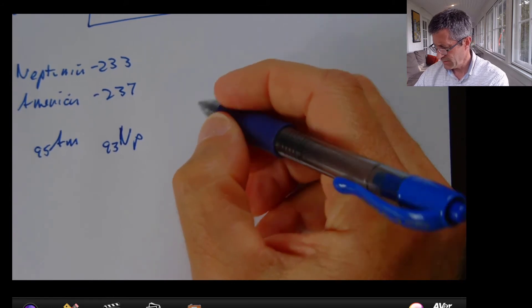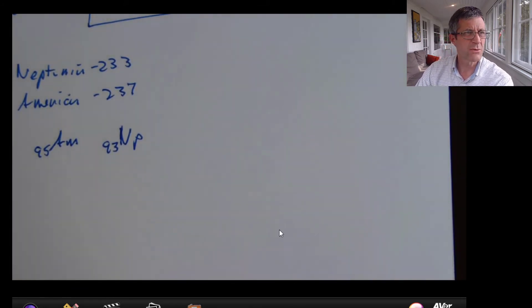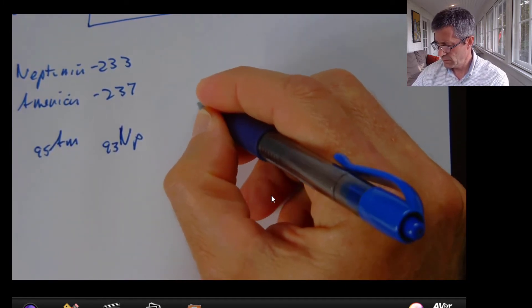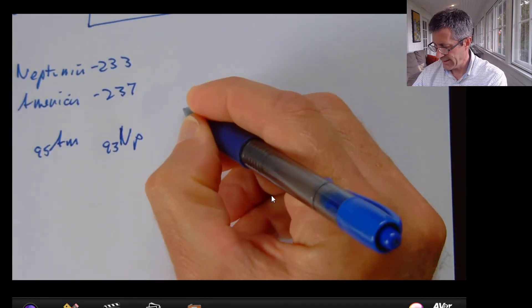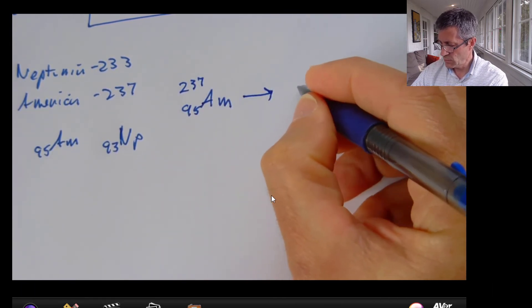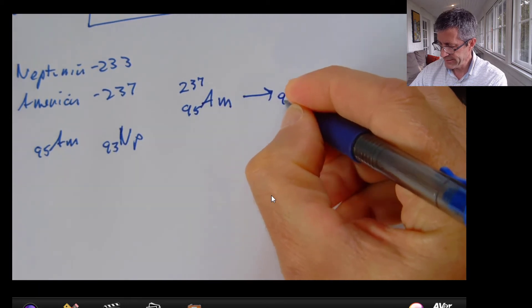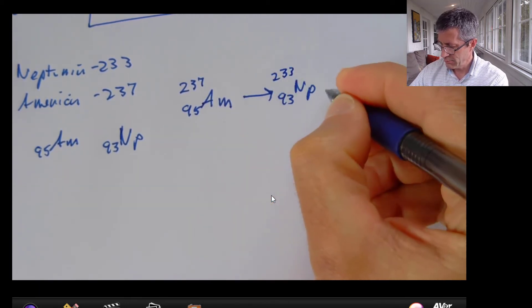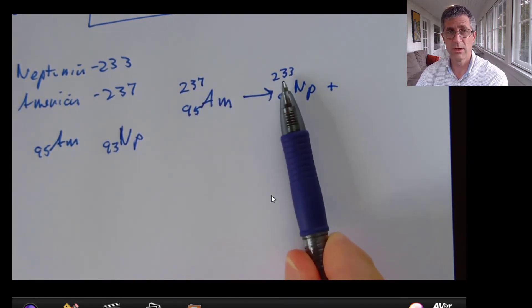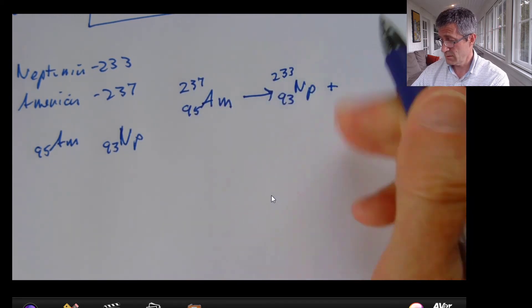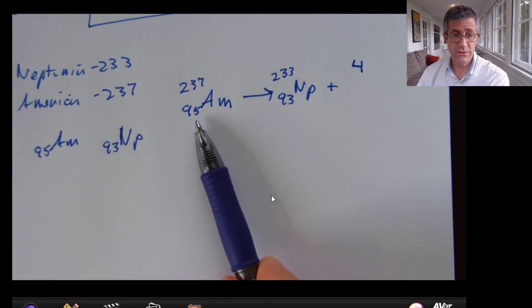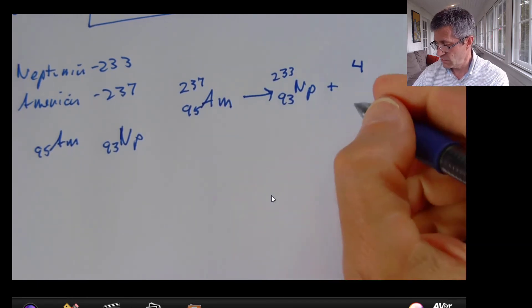So this is what I know. Americium turns into Neptunium. So I'm going to start with americium. It has to have 95. They tell me it has a mass of 237. And this is going to turn into Neptunium, NP-93 with a mass of 233 plus something else. Well, let's figure out what it is. So I start with a mass of 237, I'm left with a mass of 233. So it leaves me four mass units to deal with. I start with a charge of 95, I end with a charge of 93 here. So I must have two here.